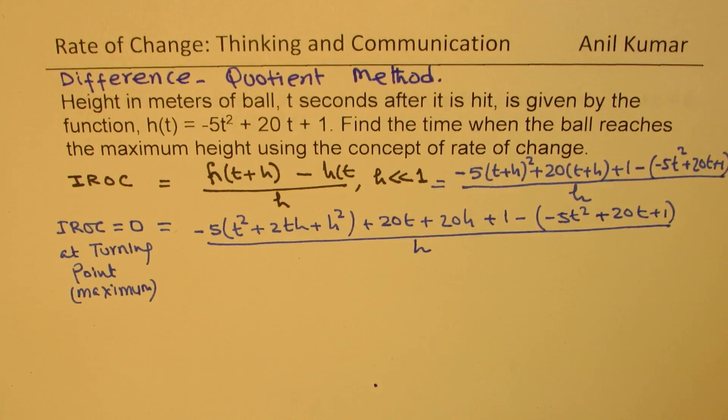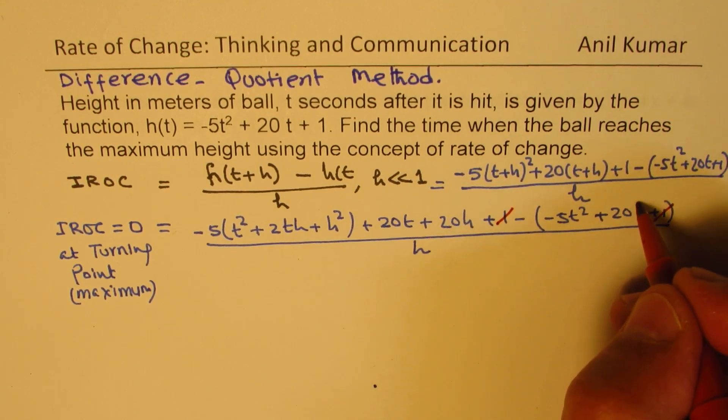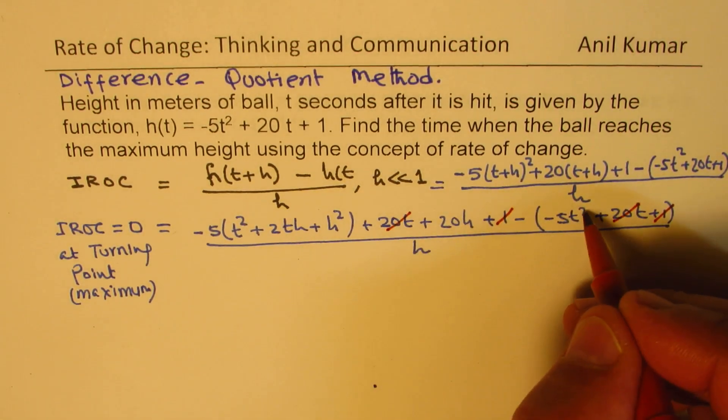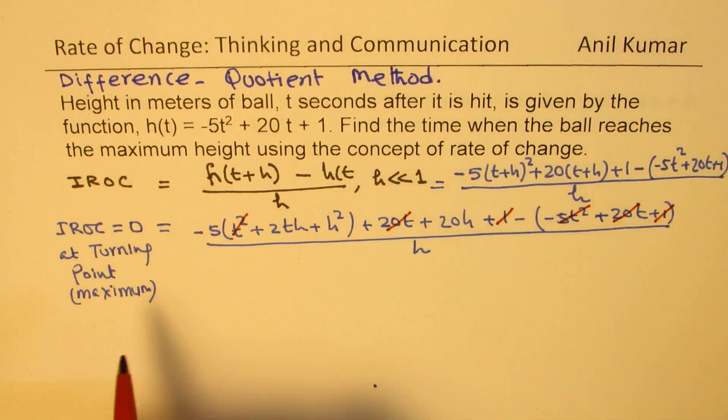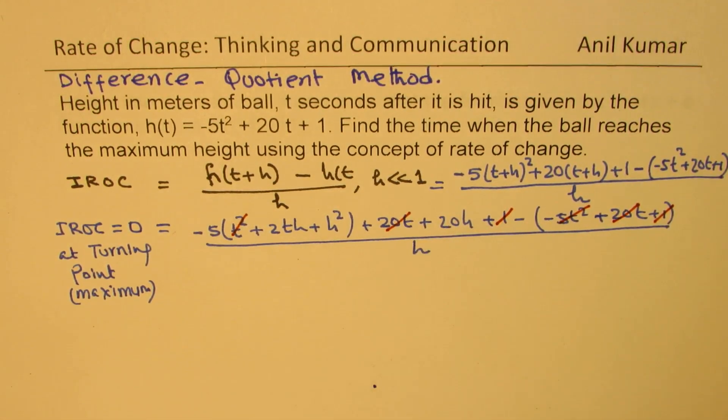So whenever you do difference quotient, you will notice that all these terms, three of them will cancel. If they don't cancel, that means something wrong has occurred. Do you understand? Minus 5t² minus 5t² taken away, correct?